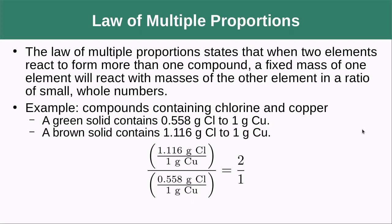The next conclusion is something called the law of multiple proportions. This states that when two elements react to form more than one compound, a fixed mass of one element will react with the masses of the other element in a ratio of small whole numbers. That's a little confusing, so let's look at our example here.